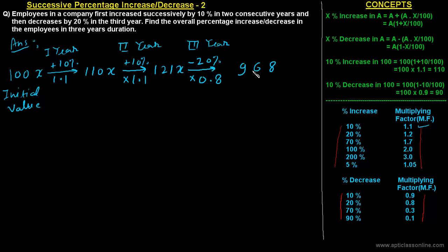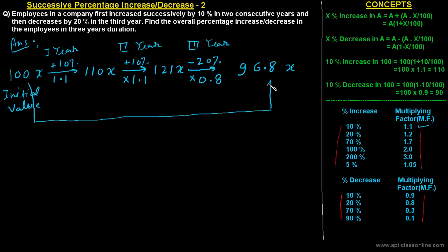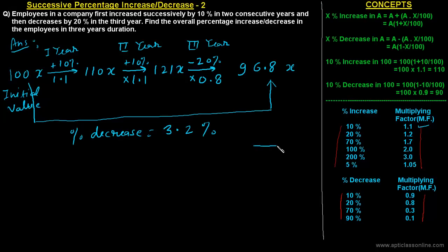The final value is 96.8X and the initial value was 100X. Since the base is 100, we can directly determine the percentage change. There is a decrease, and the percentage decrease is 100 minus 96.8, which equals 3.2 percent. We will discuss more problems in the next class.